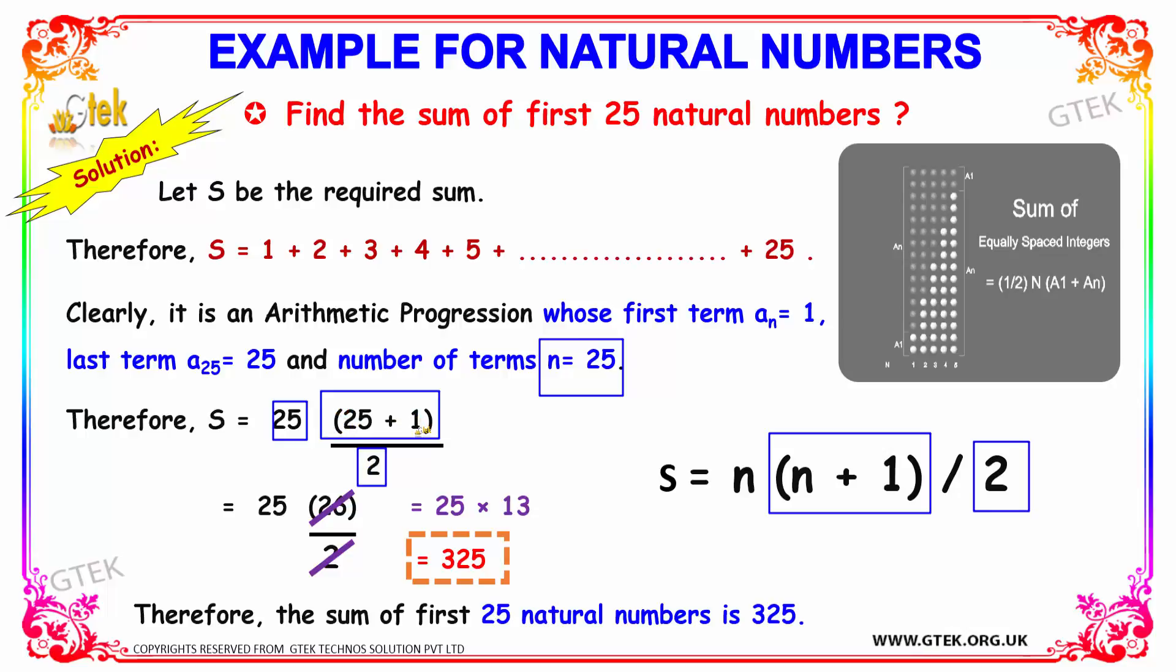So on adding 25 plus 1 inside the bracket, we'll be getting 26. So 25 into 26 divided by 2. 26 gets cancelled by 2 and we'll be getting 13. Now multiplying 25 into 13, we'll be getting 325.